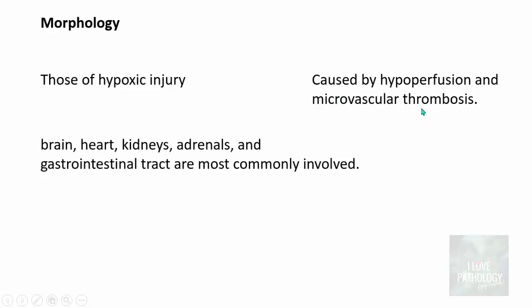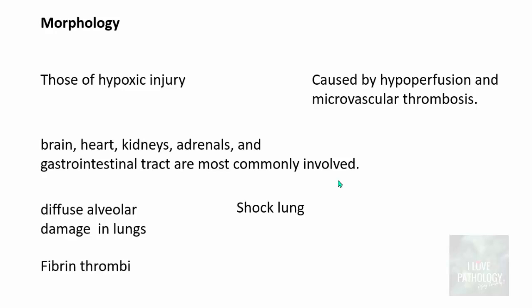You have to find evidence for hypoperfusion and microvascular thrombosis. The brain, heart, kidneys, adrenals, and gastrointestinal tract are most commonly involved, although any organ can be involved. In the case of the lungs there will be diffuse alveolar damage — that is called shock lung — and you can find evidence of thrombi, particularly fibrin thrombi in various tissues. These are most commonly found in renal glomeruli, where it is easy to appreciate microvascular fibrin thrombi.